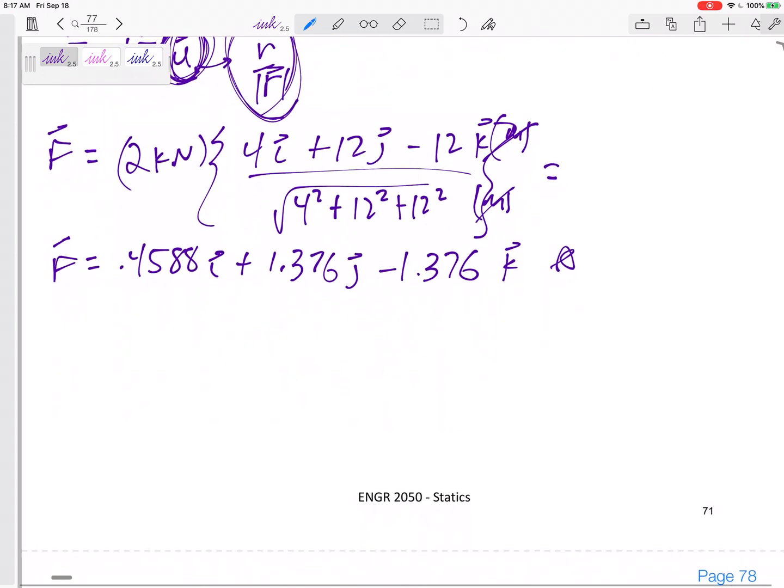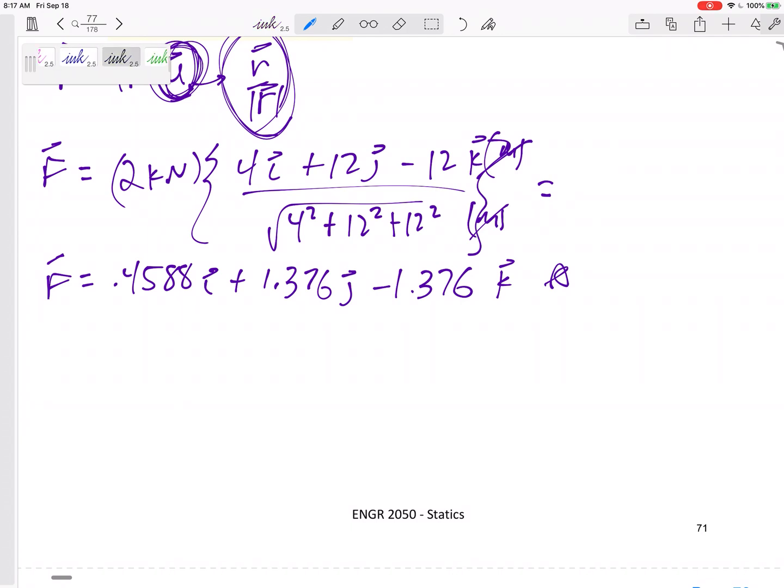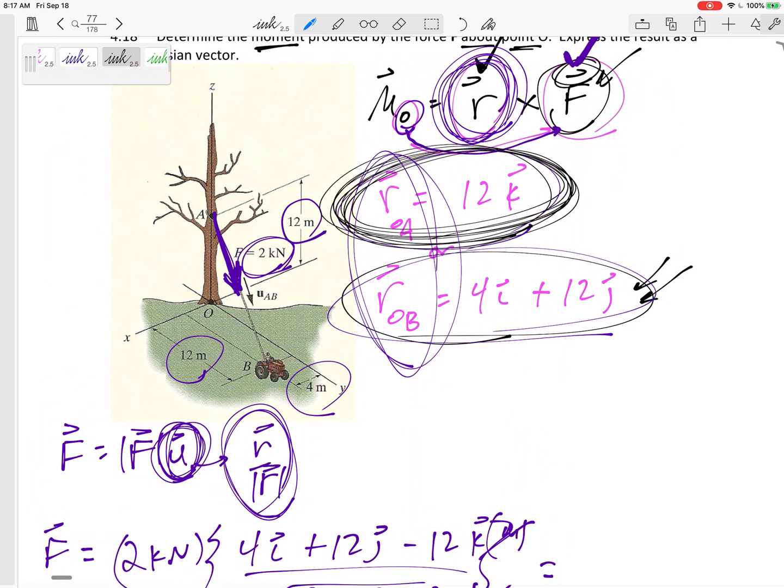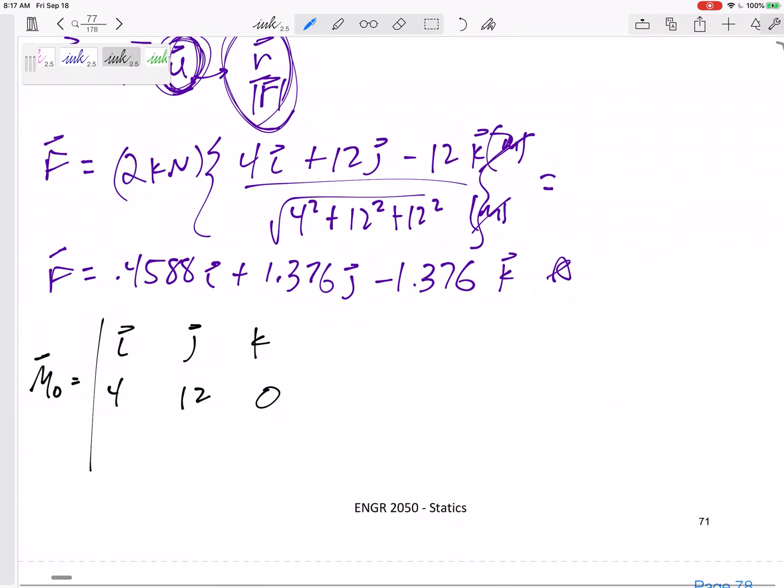Now I've got that force right here. Now I can do the cross product, the R cross F. I'm going to try to put all this in, keep this on one page. So the moment about O, I, J, K, my R was 4, 12, 0. So don't get these mixed up, right? This is the R. Either this one, I think this one would have been easier if I had just done 12K. Maybe I'll try that one. But I'm going to do this one. I'm going to do 4I, 12J, 0K, and then the force is 0.4588, 1.376, negative 1.376. And then I'm going to get my I component minus, get my J component, get my K component. And don't try to combine them. Just leave that moment right there.